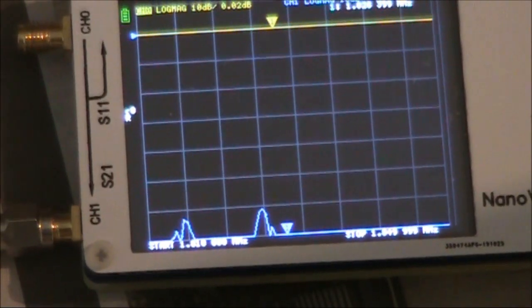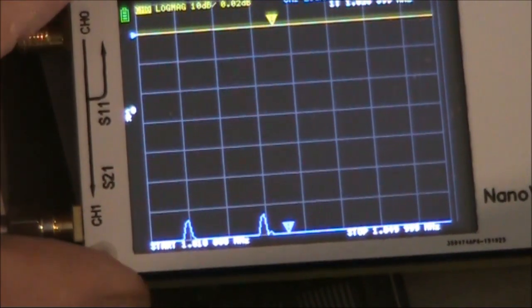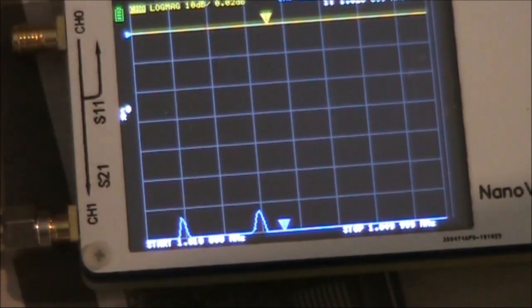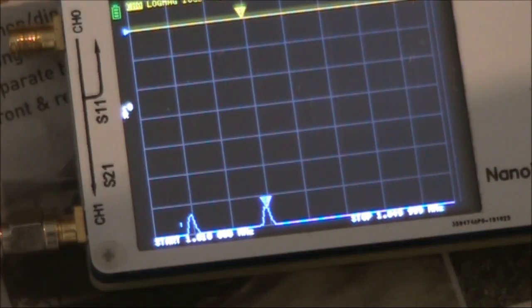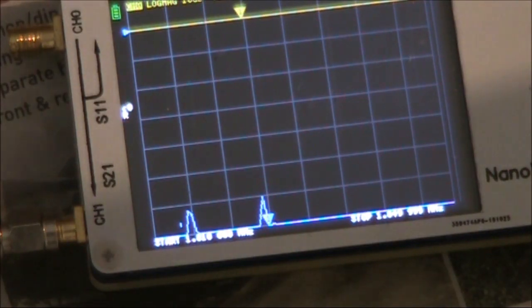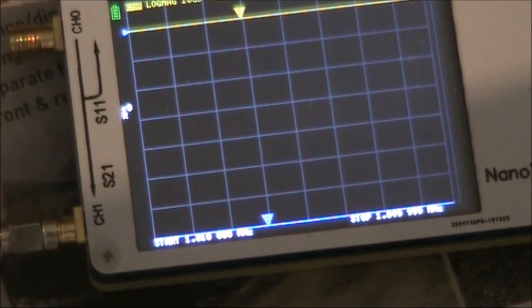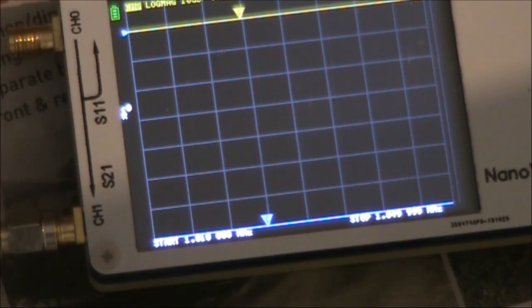This is 160 meters, 1.81 to 1.85, and you'll see there's a small peak around 1.825. I'll disconnect the antenna, I'll connect in the FT817, and we'll see what sort of signal is audible there.